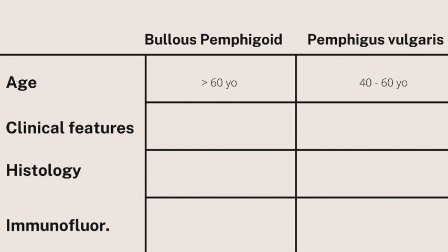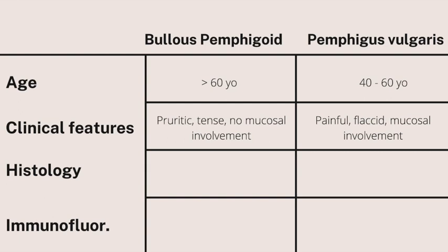For the clinical features of bullous pemphigoid, they have pruritic tense bullae and there is no mucosal involvement mostly. While for pemphigus vulgaris, it is painful, they have flaccid bullae, and there is commonly mucosal involvement.